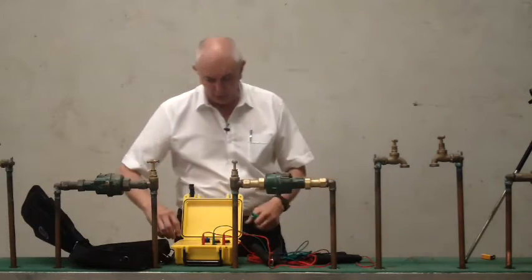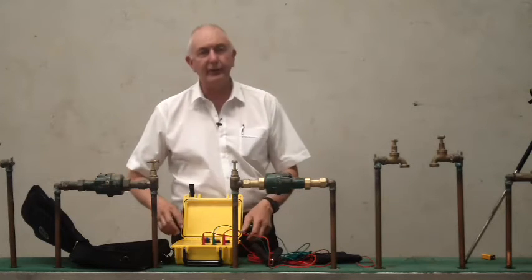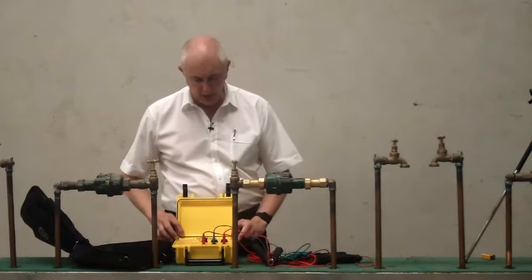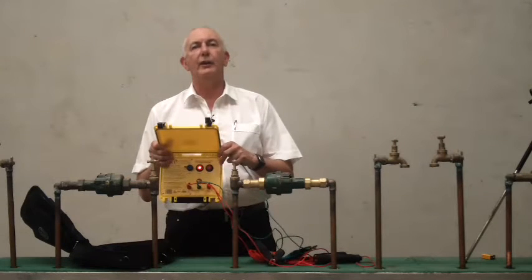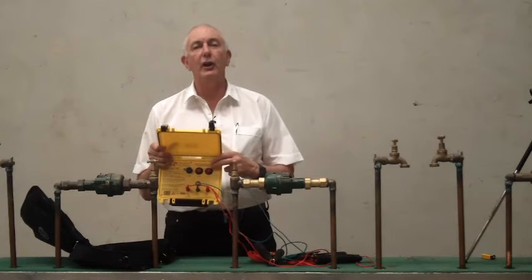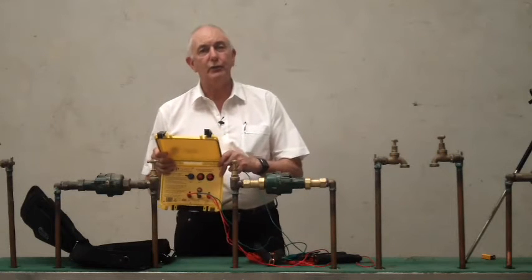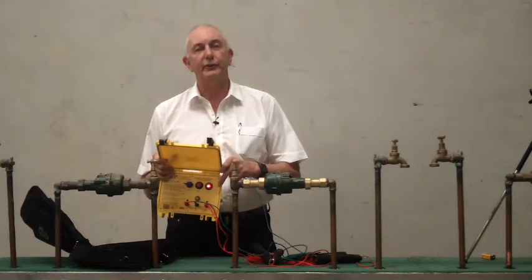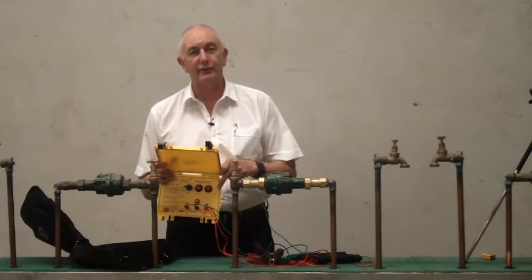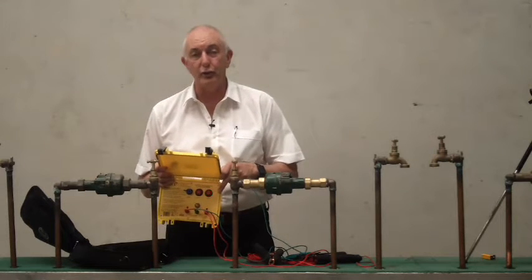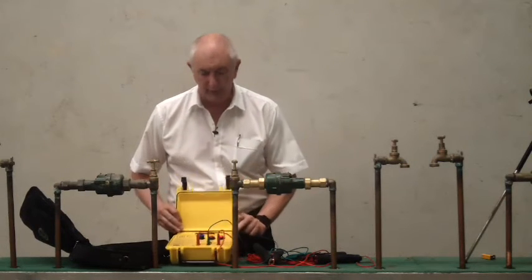The first thing you do with the PlumGuard is you need to test all the leads. When you first turn the unit on, you'll notice that the lights flash—the on light and the test lead light. They will continue to flash until you do a successful test, because it's no good using the unit if the leads aren't working or they've been damaged.